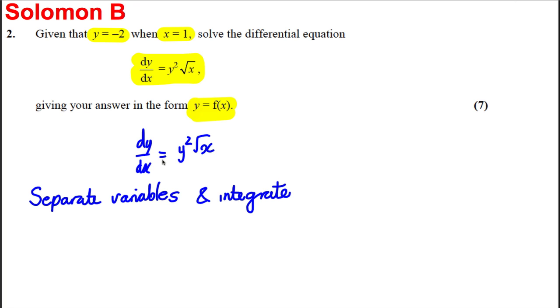So everything with y is on the left-hand side, everything with x is on the right-hand side. So we'd divide both sides by y², and we'd multiply both sides by dx. We'd have 1/y² dy, and the integral of this is equal to √x dx, and we'd integrate this.